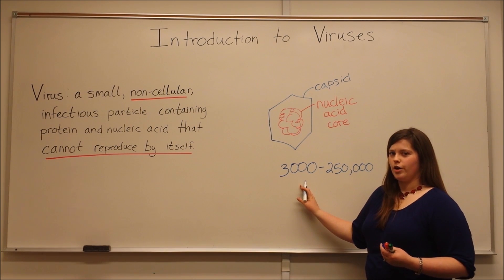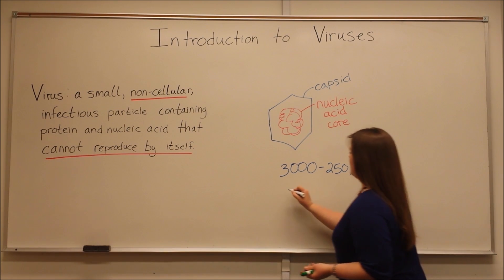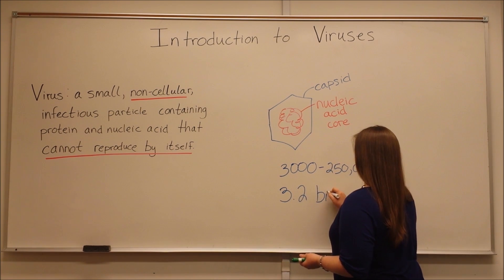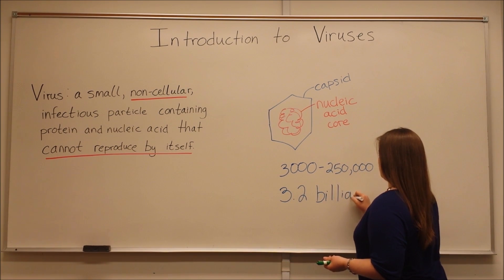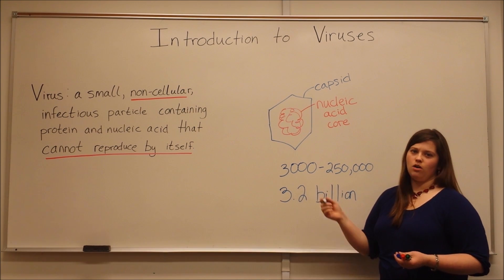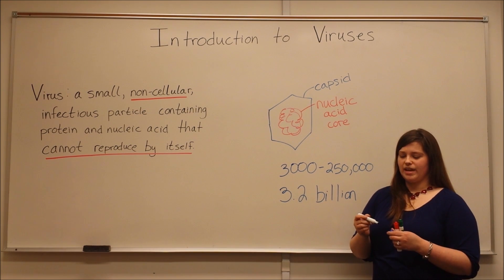Now, just to put this in perspective, though, how many nucleotides do you think are in the human genome, for example? Humans, it's about 3.2 billion nucleotides. So you can see that while there is certainly a range here for viruses, all viruses are far less complex than an organism like a human being.